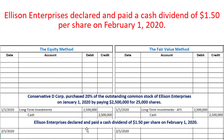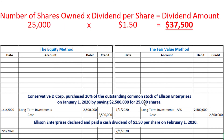Next, Ellison Enterprises declared and paid a cash dividend of one dollar and fifty cents per share on February 1st, 2020. For the fair value method, we take the 25,000 shares multiplied by the dividend per share of one dollar and fifty cents, which gives us 37,500 dollars. So we debit cash for 37,500 dollars and credit dividend revenue also for 37,500 dollars.